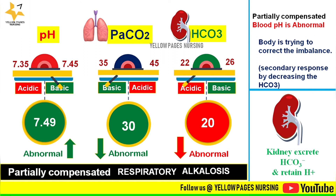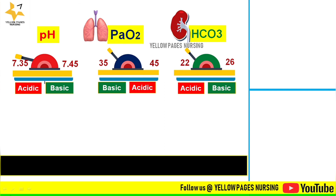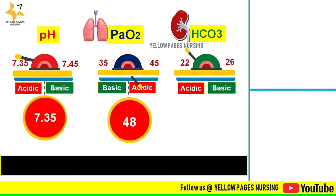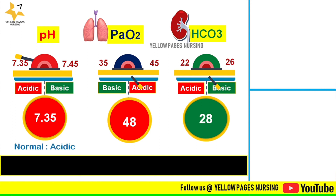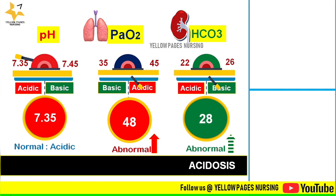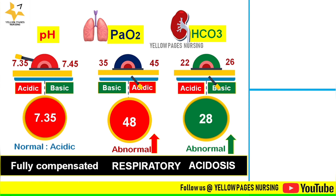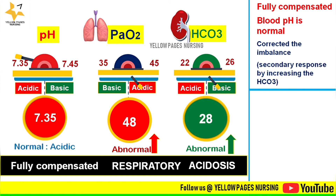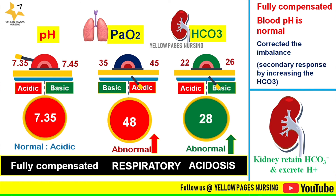The next example: pH is 7.35, PaCO2 is 48, and bicarbonate is 28. Because pH is at the lower boundary of normal at 7.35, we consider it in the acidic state. PaCO2 is above normal, also indicating acidic — acid along with acid — so this is respiratory acidosis. Since pH lies within the normal range, this is fully compensated respiratory acidosis. The kidney has compensated by retaining bicarbonate and excreting hydrogen ions, raising bicarbonate above normal.